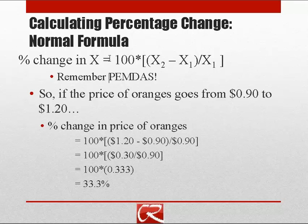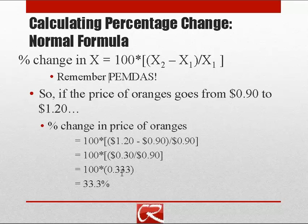As an example of the normal percentage change calculation: if the price of oranges goes from $0.90 to $1.20, our $1.20 is the new value x2 and $0.90 is the original value x1. We plug in $1.20 minus $0.90, which gives $0.30, then divide by $0.90 on the bottom, giving 0.333, or one-third. We multiply by 100 to get 33%.